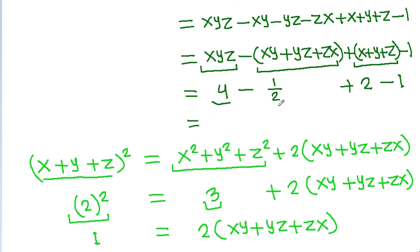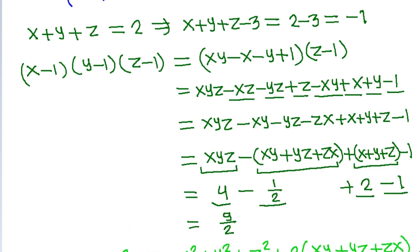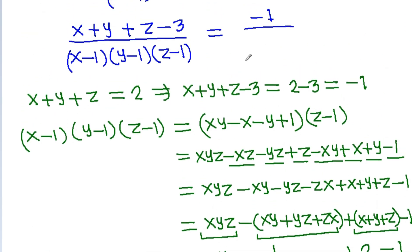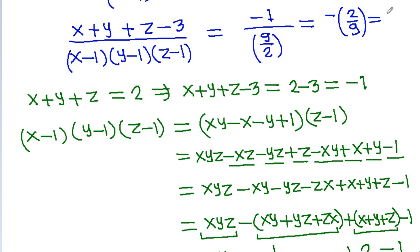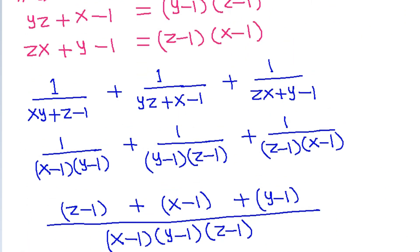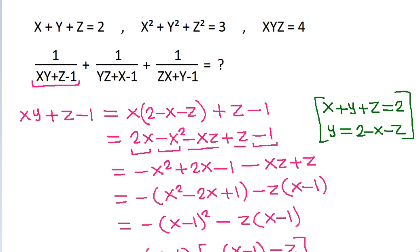And 4 plus 2 is 6, minus 1 is 5, minus one half gives nine by two. So this equals nine by two, and the answer is minus 1 divided by nine by two, which equals minus two by nine. So the answer is minus two by nine. Thank you.